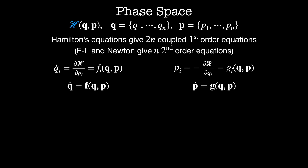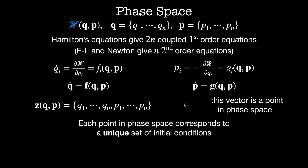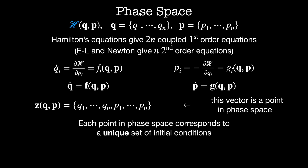In phase space, there's no reason to treat these coordinates differently from one another. So we can combine them into a single vector z, obtained by stringing together all of the generalized positions and all of the generalized momenta into one large vector. This vector z is a point in the phase space of our system. Each point in phase space corresponds to a unique set of initial conditions — each point z tells us where each particle is located and what their momenta are at any given point in time. The entire dynamics of the system are obtained by evolving this point forward in phase space according to Hamilton's equations. So in phase space, z-dot is given by some vector function H of q and p, obtained by stringing together all of the fi's and all of the gi's, giving us the full dynamics of the trajectory in phase space.